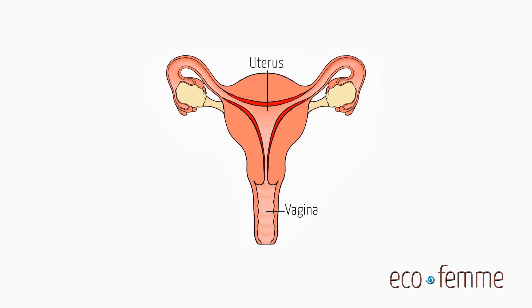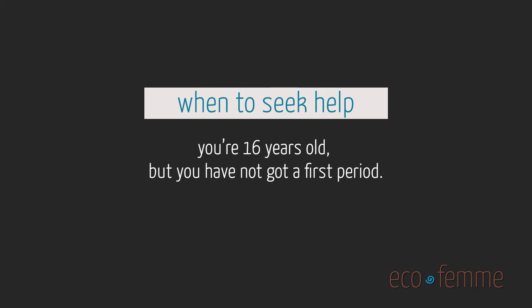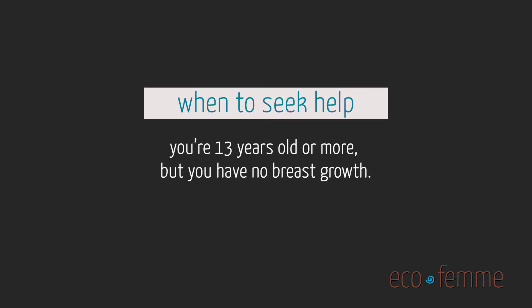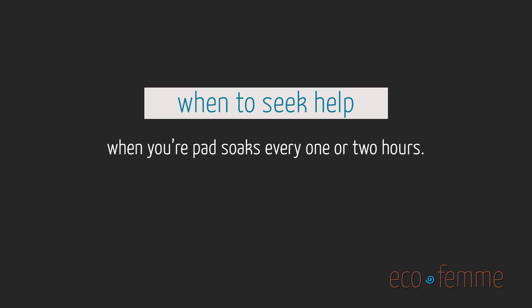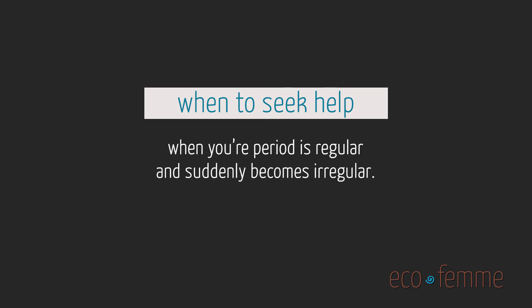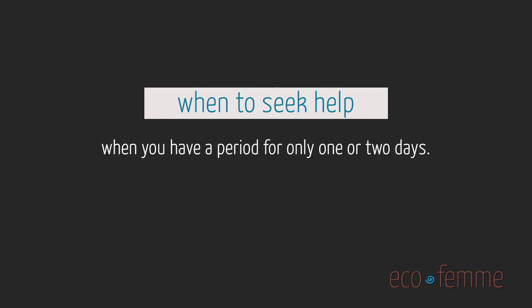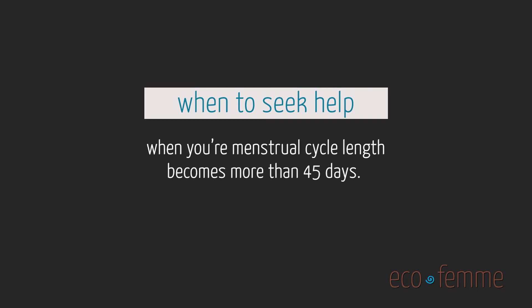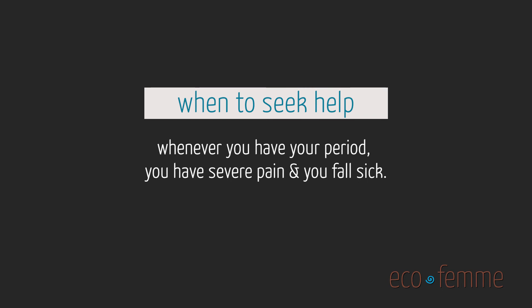You should seek help if: you are 16 years old but have not got your first period; you are 13 or more but have no breast growth; your pad soaks every one or two hours; your period was normal and regular but suddenly becomes irregular; you have your period for only one or two days; your menstrual cycle length becomes more than 45 days or less than 19 days.